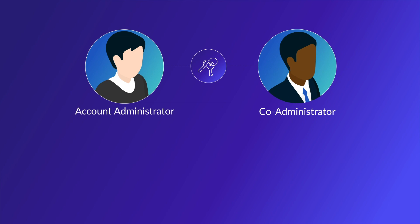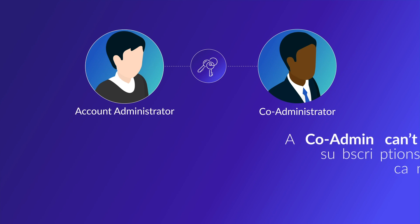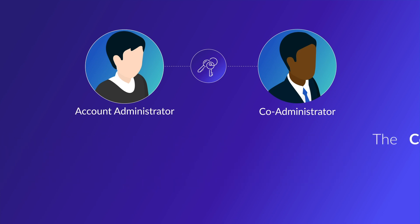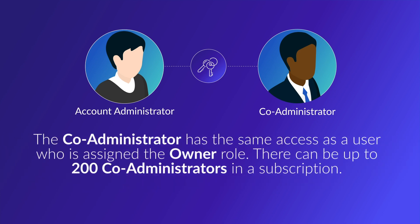A co-administrator has the same access as the service administrator. However, a co-admin can't change the association of subscriptions to Azure directories. The co-admin can assign users to the co-administrator role, but cannot change the service administrator. Essentially, the co-admin has the same access as a user who is assigned the owner role, and there can be up to 200 co-administrators within a subscription.